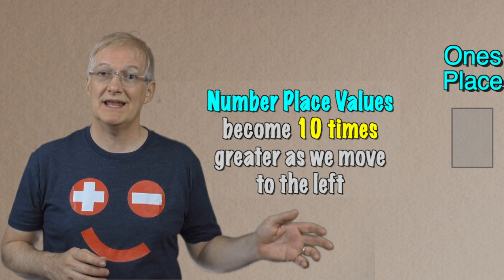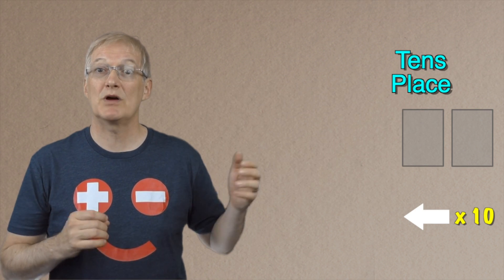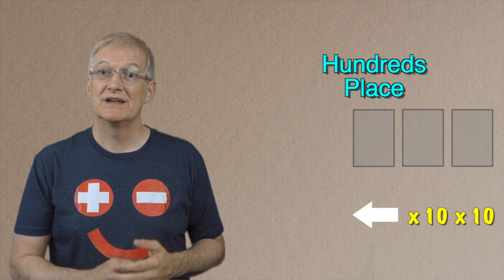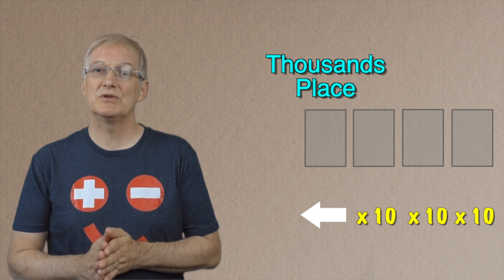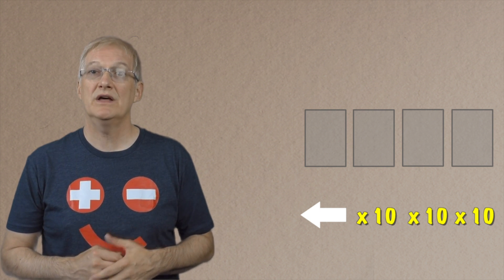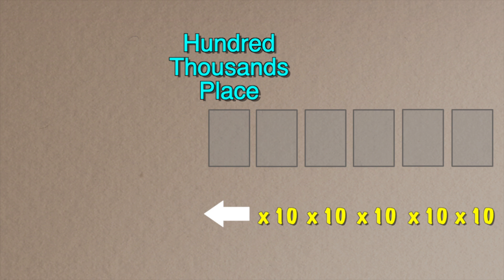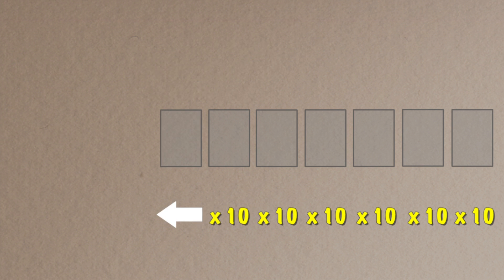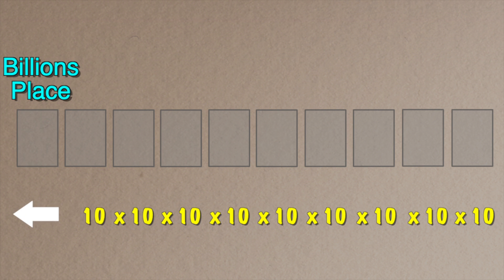You've probably noticed by now that our number places get 10 times bigger as we move towards the left. And we can keep on adding more and more number places to represent larger and larger groups in order to represent higher and higher numbers. For example, the next number place will be the ten thousands place, then the hundred thousands place, then the millions place, then the ten millions place, then the hundred millions place — and it can keep on going forever to represent larger and larger numbers.